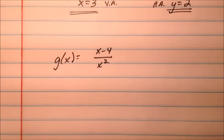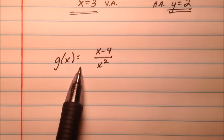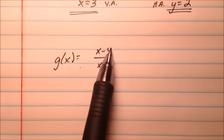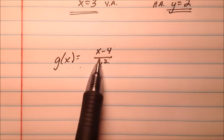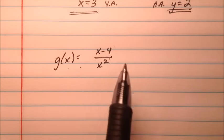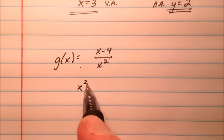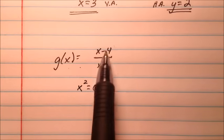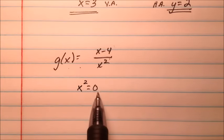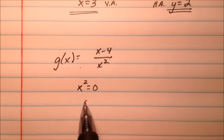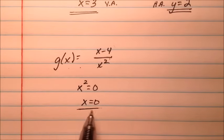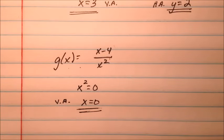The next function is g of x equals x minus 4 over x squared. We take the denominator, set it equal to 0, and since x squared equals 0 gives x equals 0 — and it doesn't cancel with the numerator — that's a non-removable discontinuity, so x equals 0 is our vertical asymptote.